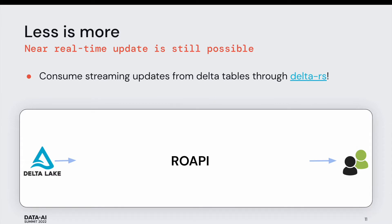This design also enables consuming streaming table updates from systems like Delta Lake, because the ROAPI instance can subscribe to remote upstream updates as a consumer. The end user can still enjoy single-digit second streaming update reads for the data they query against — so it's still fairly fresh data they'll be able to interact with.